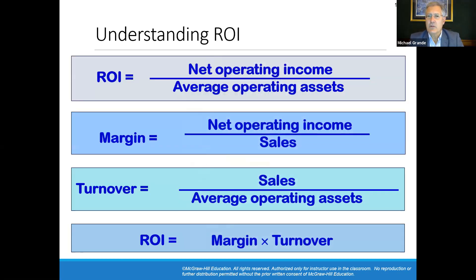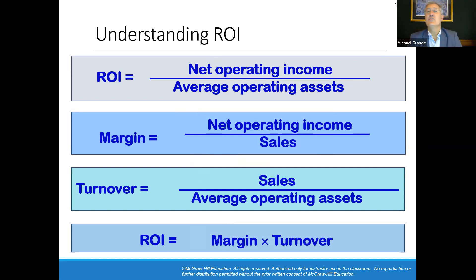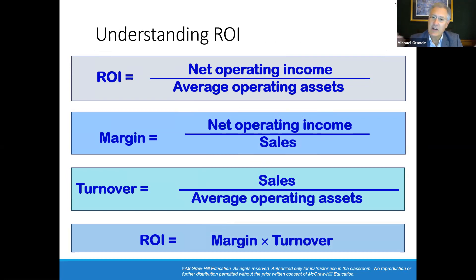Let's look more closely at return on investment. We define it as net operating income divided by average operating assets. We also define margin as net operating income divided by sales, and turnover as sales divided by average operating assets. Return on investment essentially equals margin times turnover, because sales algebraically cancels out.